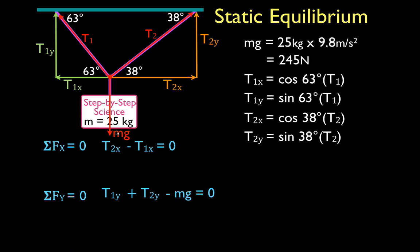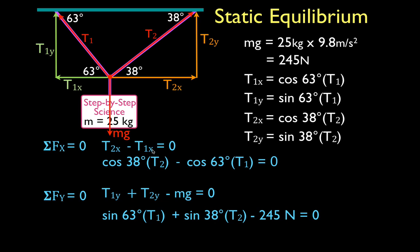We have five terms and we're going to substitute them in. For the sum of the force in the x-direction, we substitute in and get: cosine of 38 times T2 minus cosine of 63 times T1 equals 0. And for the sum of the force in the y-direction using our sines: sine of 63 times T1 plus sine of 38 times T2 minus 245 equals 0. We now have two equations and two variables, T1 and T2. We can use algebra to solve for both, which we'll do on the next slide.